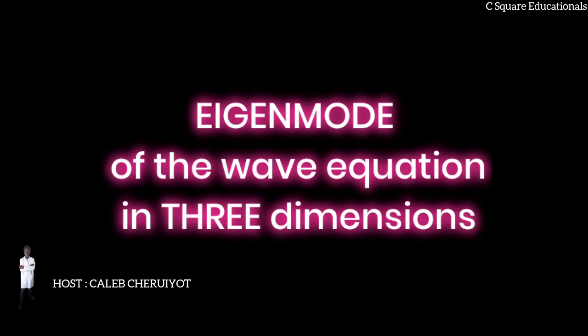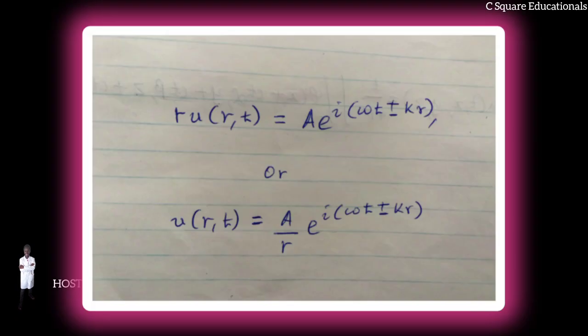Following the derivation in the previous section on plane-wave eigenmodes, if we again restrict our solutions to spherical waves that oscillate in time with a well-defined constant angular frequency, then the transform function Ru(r,t) has simply plane wave solutions shown.